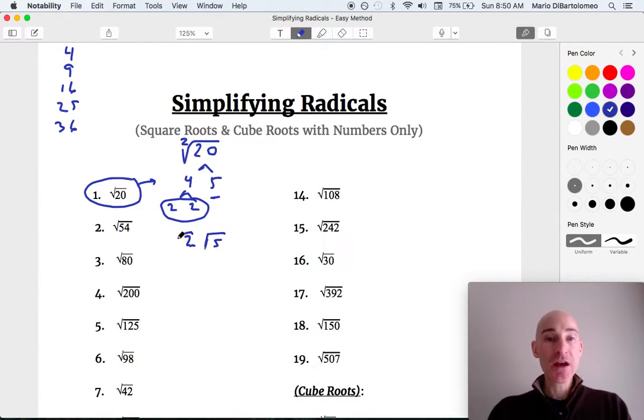If you want to check your work, you take the number on the outside, 2. You square it. That's 4. And you multiply it by the number on the inside. And that gives you 20, which is the original square root. And you got it.